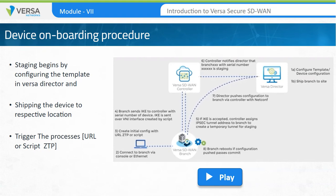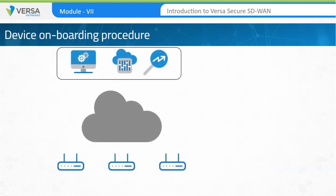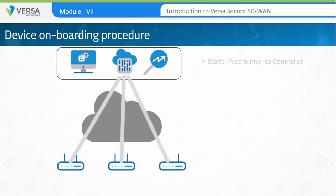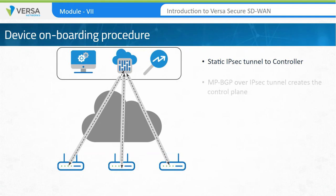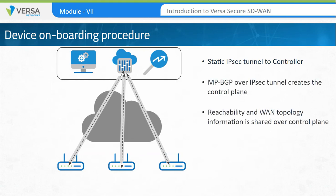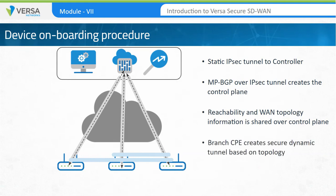Once the branch receives its configuration from Versa Director, the branch device reboots and joins the SD-WAN. Every SD-WAN branch will establish static IPSec tunnels to Versa Controller. The Control Plane protocol, which is multi-protocol BGP, is established over the IPSec tunnel. This creates the control plane of the solution where reachability and WAN topology information is shared. Once branches have received the SD-WAN reachability information from the controller, each branch establishes secure dynamic overlay tunnels to remote branches based on the topology information defined by the administrator. These dynamic tunnels are referred to as data paths, and traffic between branch locations is forwarded over these secure tunnels.